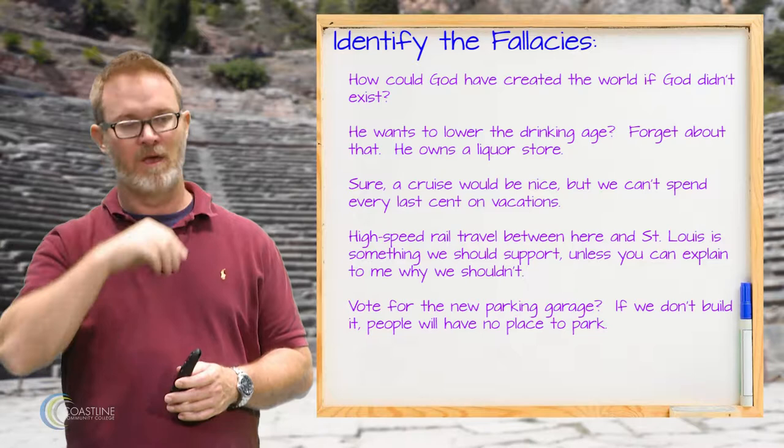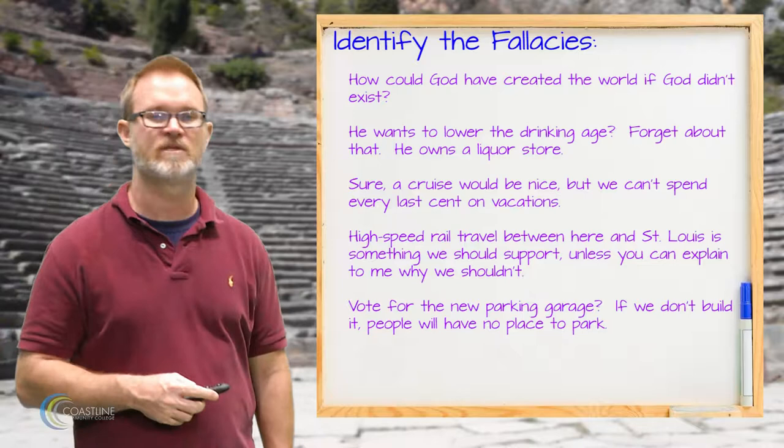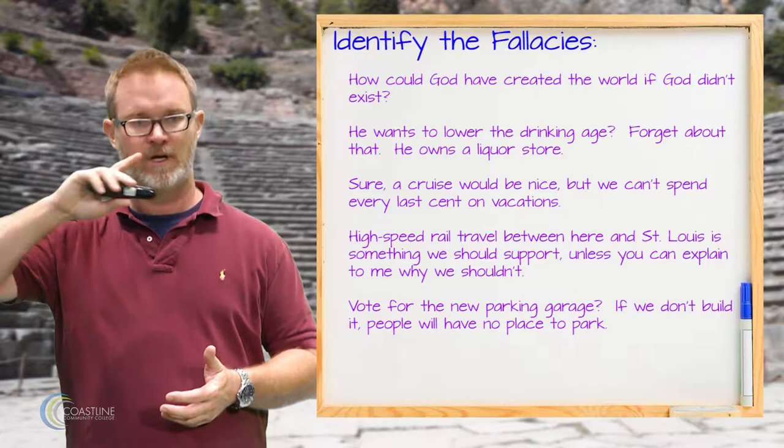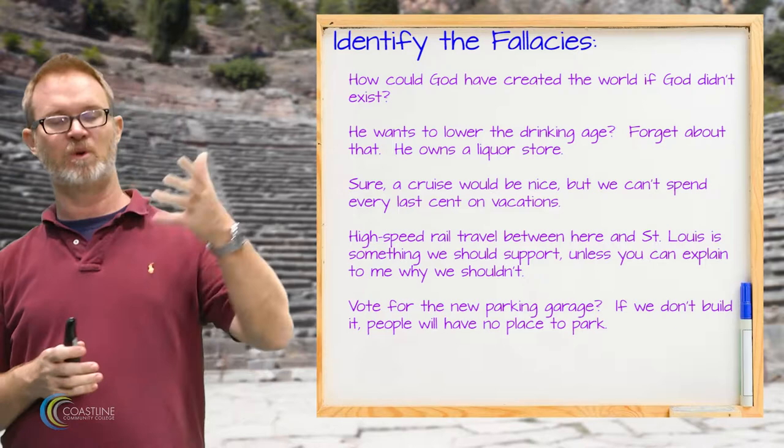The next one says: vote for the new parking garage — if we don't build it, people will have no place to park. This strikes me as a couple of things. One, it's a kind of slippery slope: if we don't build the parking garage, there will be no parking. It also strikes me as a false dilemma — either we build this parking garage or people don't have anywhere to park. So it kind of strikes me as both.